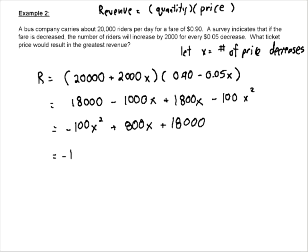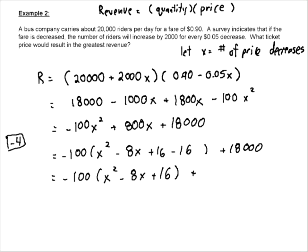And now we complete the square on this. We're going to take out the 100, leaving us with x² - 8x. And then we're going to have our plus 18,000 come along for the ride. Half of negative 8 is negative 4. So we're going to add 16 and minus 16.